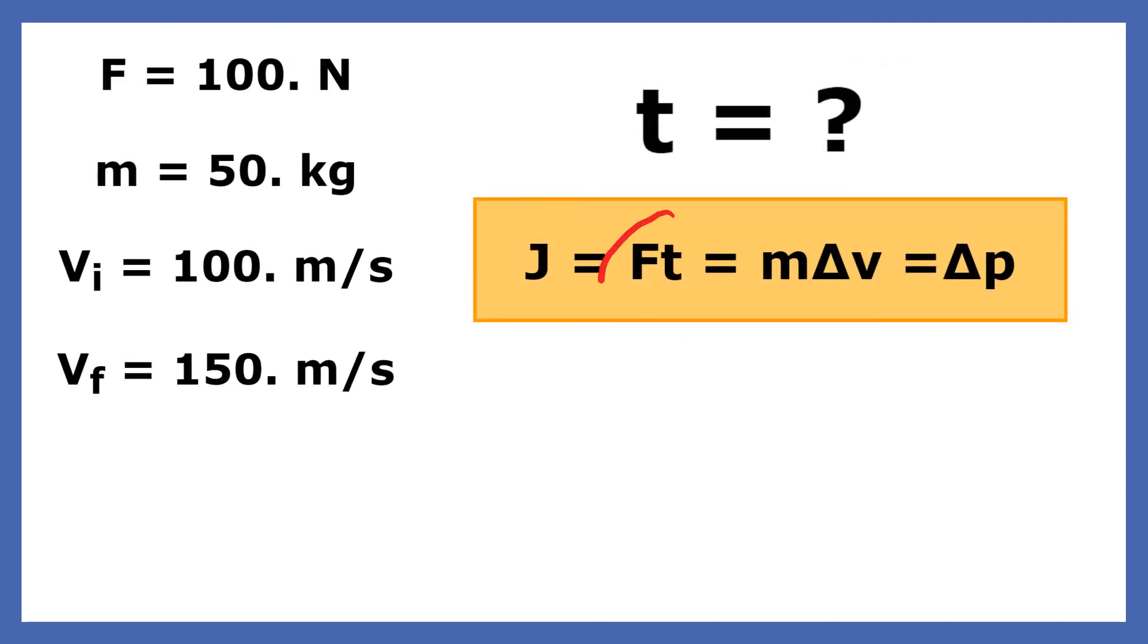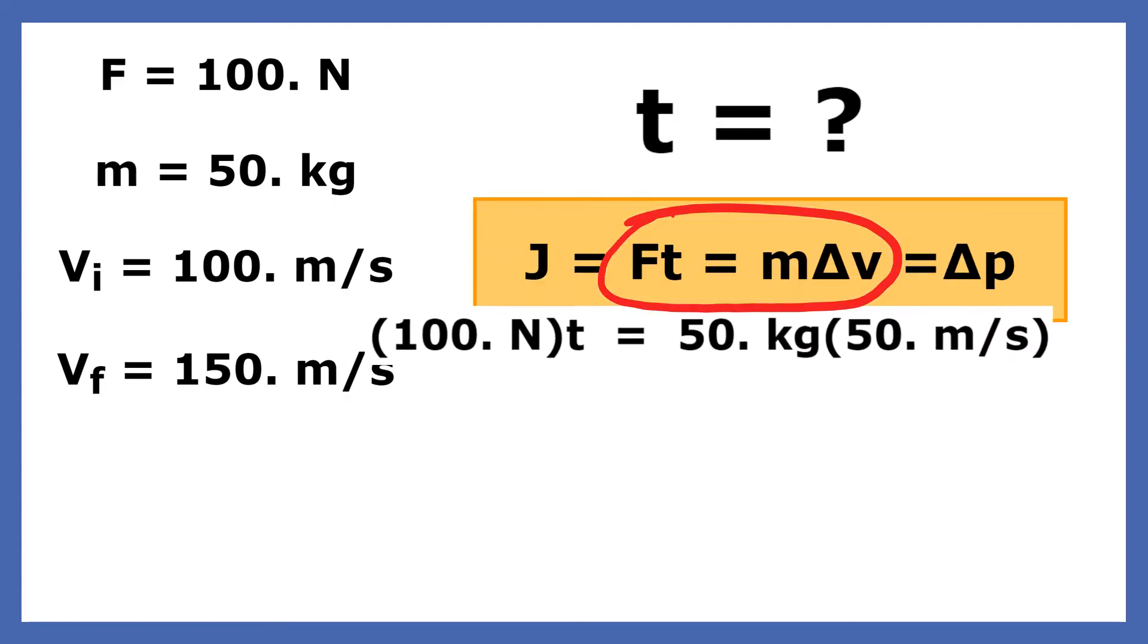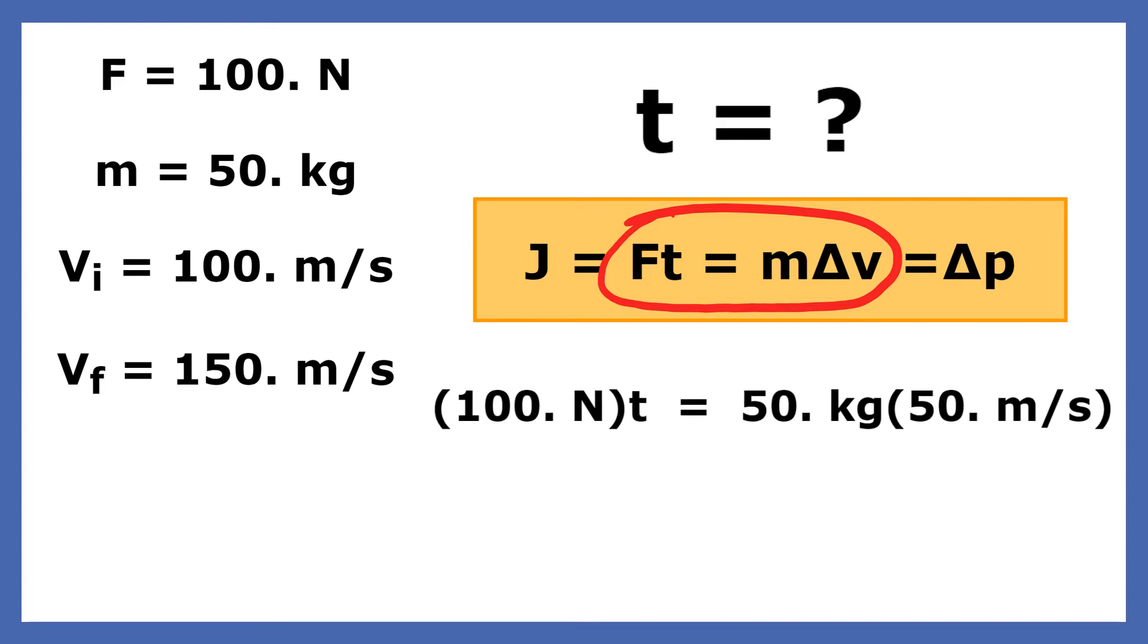When we scan the long equation, we find that Ft, force times time, equals m delta v. We're given a force of 100 newtons, substitute a mass of 50, and obviously we get a change in v because when we go from 100 to 150, that's a change of positive 50. Substitute, solve, divide both sides by 100 and we get 25 seconds.